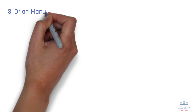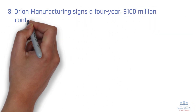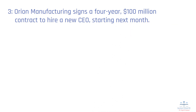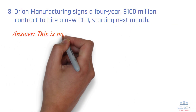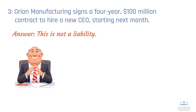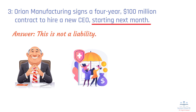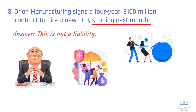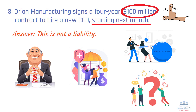Scenario 3: Orion Manufacturing signs a 4-year, $100 million contract to hire a new CEO, starting next month. Answer: This is not a liability. Although the company has committed to paying the CEO in the future, no obligation exists yet because the CEO has not started working. Under accounting rules, a liability arises only when a company has received benefits. Since the CEO has not yet provided any services, the company has no current obligation. Even after the CEO starts, the company will record only earned salaries as liabilities, not the full contract amount. Future uncertainties, such as resignation or contract modifications, also prevent it from being recorded as a liability.